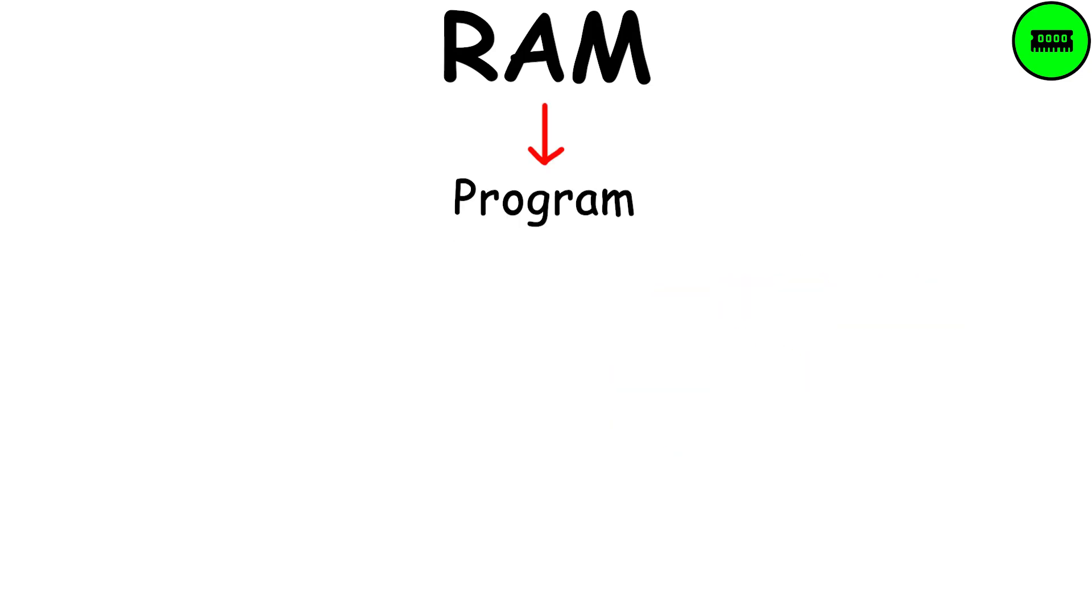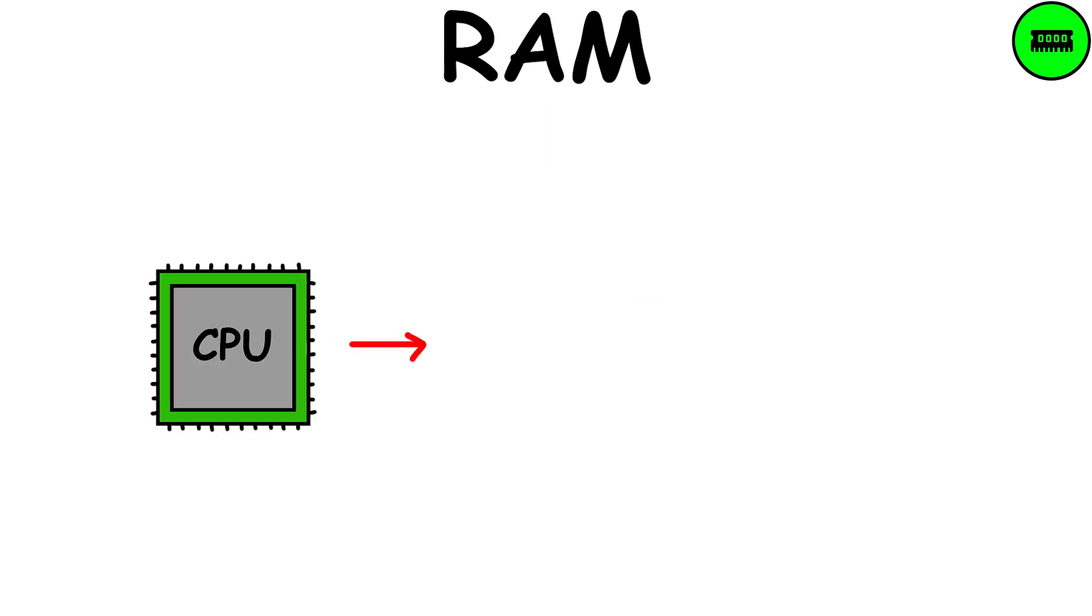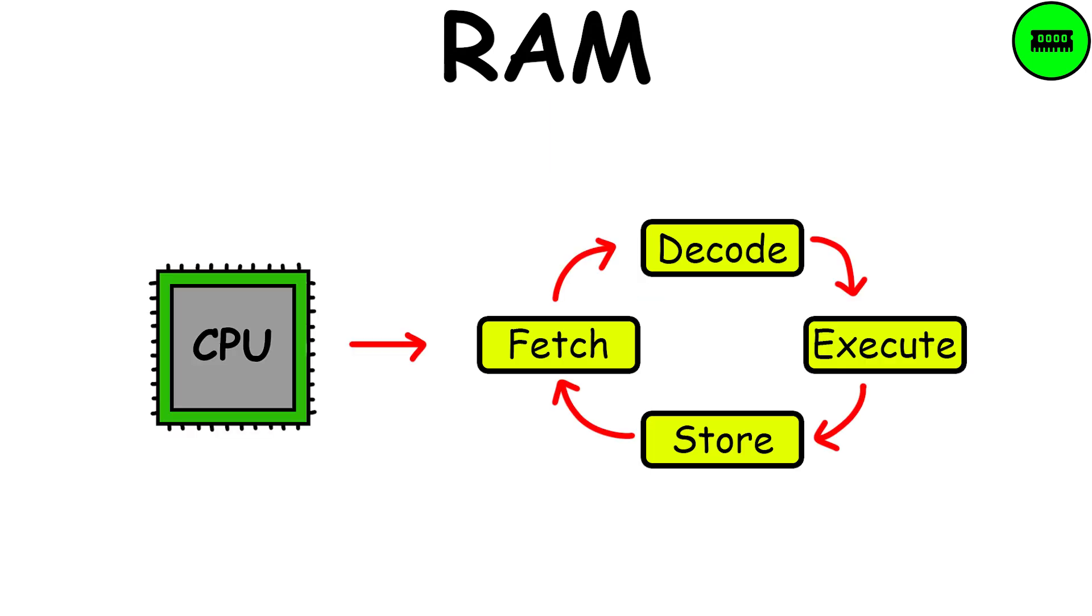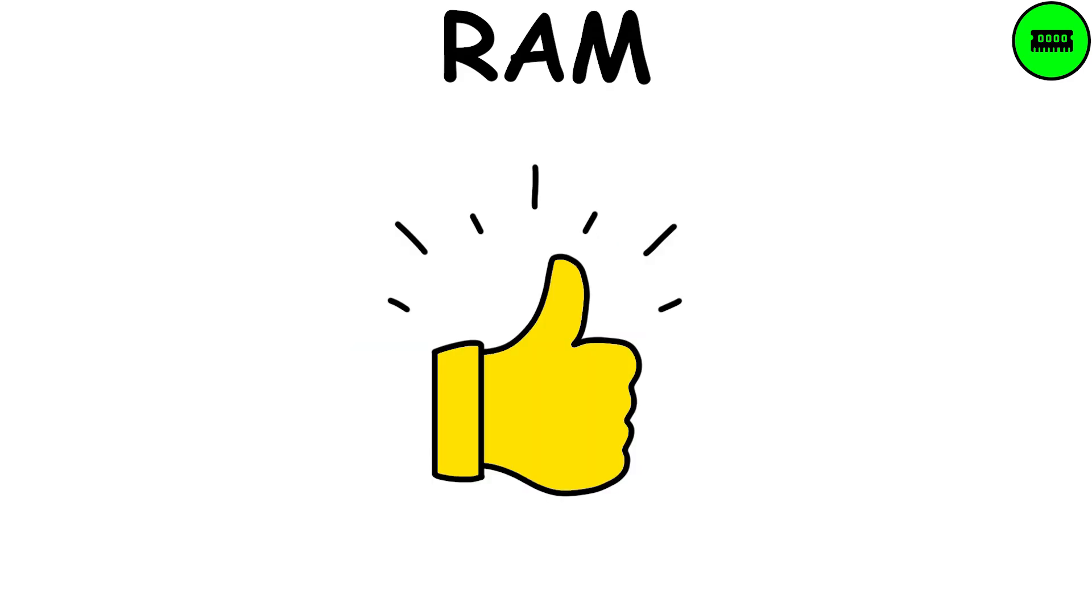Since a program is essentially a list of instructions in memory, to run it, the CPU executes these instructions one by one in machine cycles until the program is complete. This process happens incredibly fast.